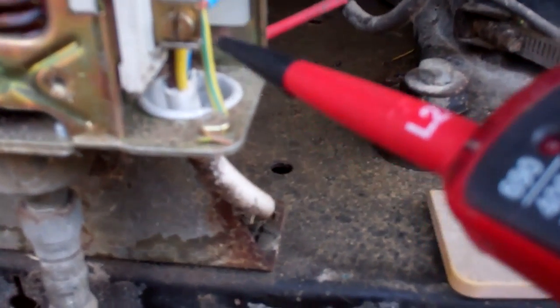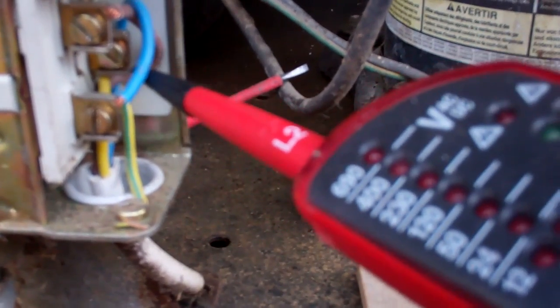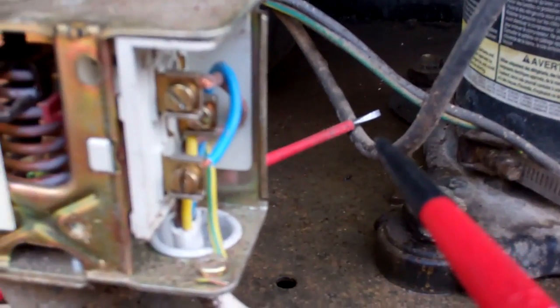I think on the high pressure switches, they would normally, when they're made, they're across these two, and when they trip, I think the power goes to this one, so you have to wire them up differently.